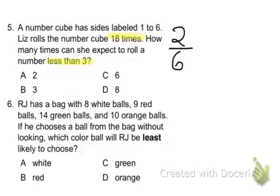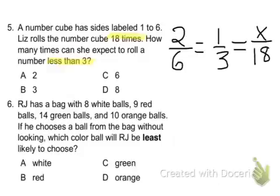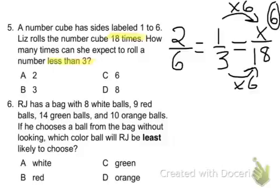We can simplify 2 sixths, divide them both by 2, and you get 1 third. So 1 out of every 3 times, Liz is going to get a number less than 3. So if 1 out of 3 times we get a number less than 3, how many out of 18 times? And here we can see the relationship. Times 6. We'll do it to the numerator. Times 6. And 1 times 6 is 6. So the answer to number 5 is C.